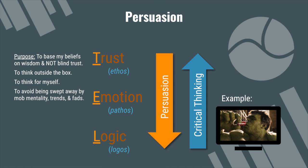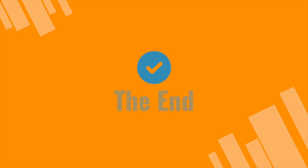Remember, persuasion and critical thinking go in opposite directions, and so those who seek to manipulate will try to appeal to emotion and sidestep or subvert the logical and critical thinking aspect. So we want to ask: is the goal of this other person or advertisement to get something out of me, or is the goal to give me something that will benefit me? Are they trying to help me think well, or are they trying to help me not think? Do they want me to make my own choice, or do they want to make the choice for me? Thank you for joining me, and be sure to contact me with any questions that you have.